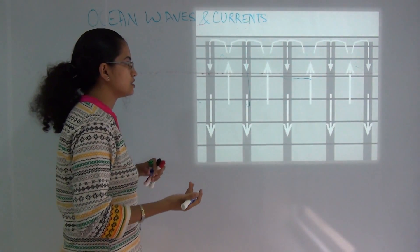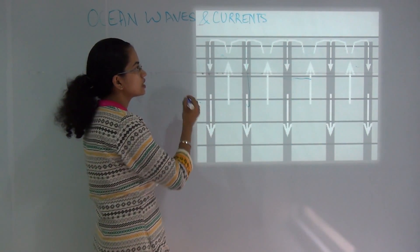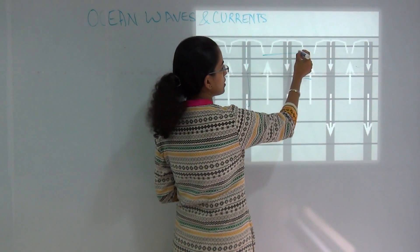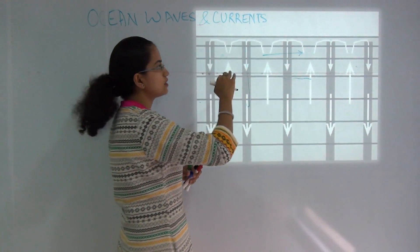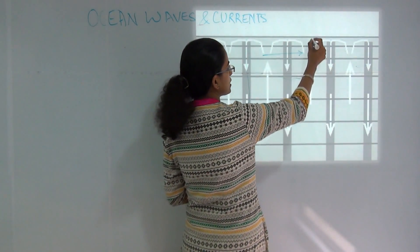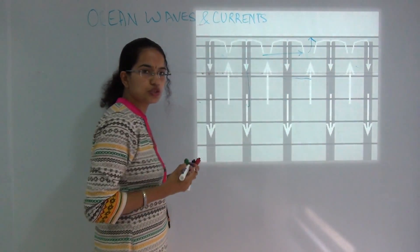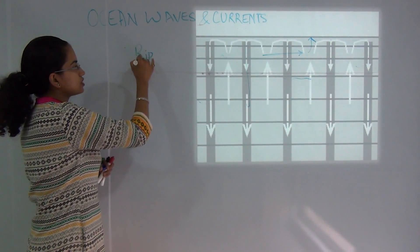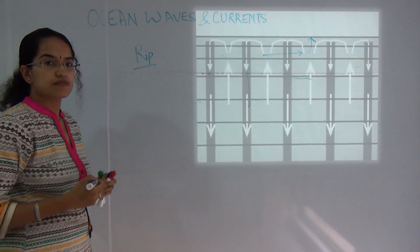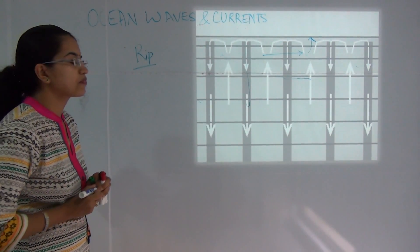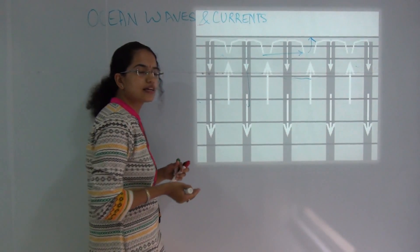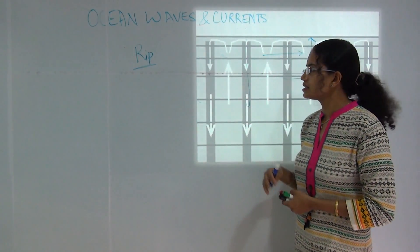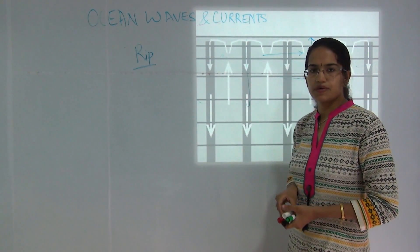What is advised for swimmers is to go parallel to the coast rather than swimming against the direction of the rip current. Go parallel to the coast and then follow the direction of the waves towards the shore to escape the rip current. These were the two important currents discussed today, along with the characteristics and functions of waves. We will be covering more in the next class — subscribe to the exam-based channel.